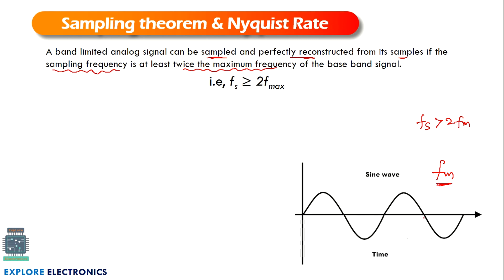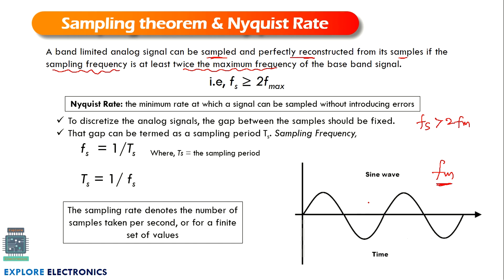If this is the frequency, the samples we are going to take from this particular signal should occur more than the frequency of the signal — that is the meaning. Nyquist rate is the minimum rate at which a signal can be sampled without introducing errors when reconstructing it.